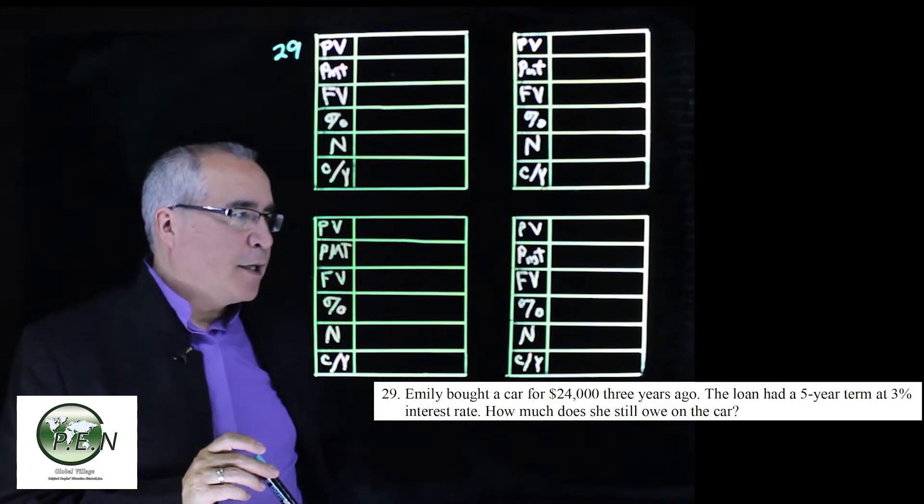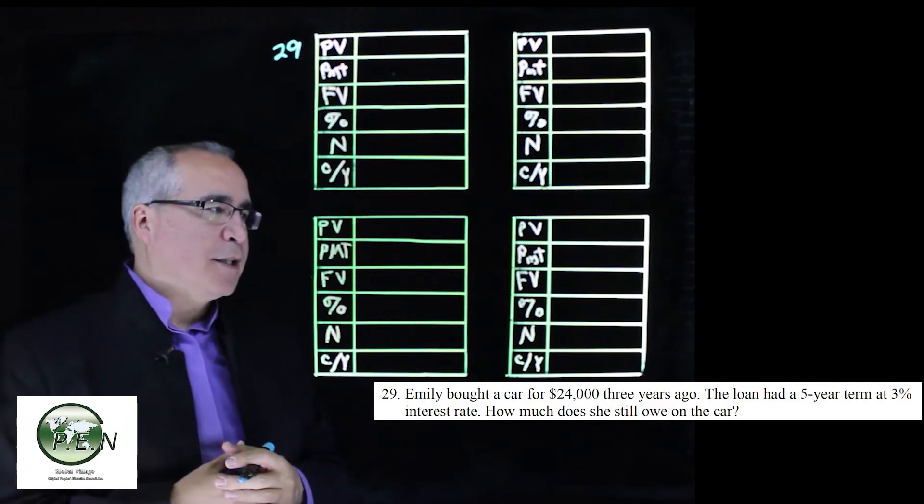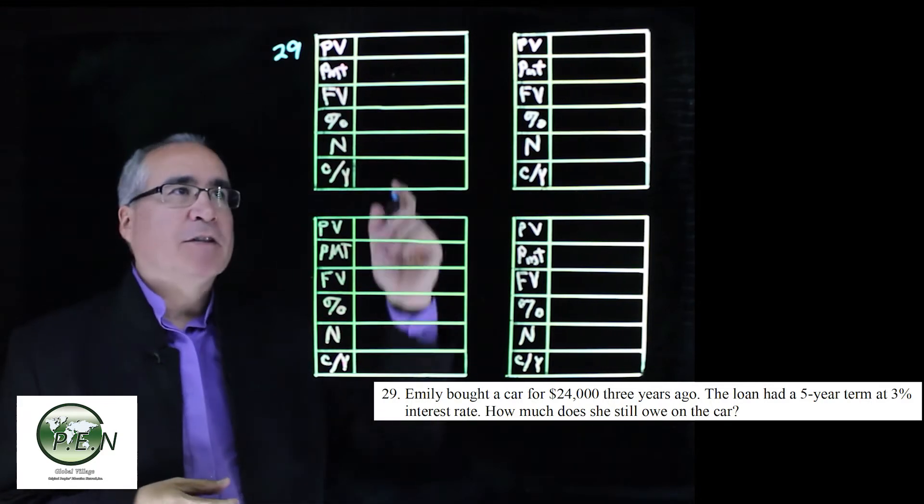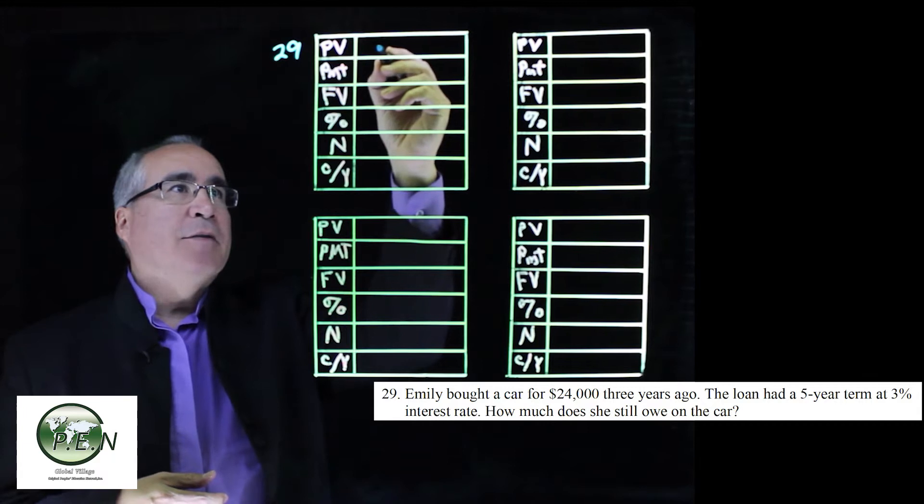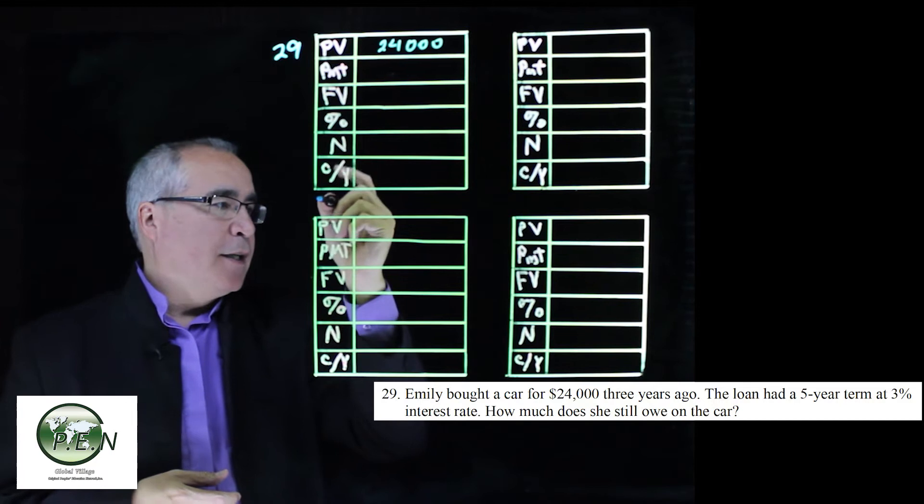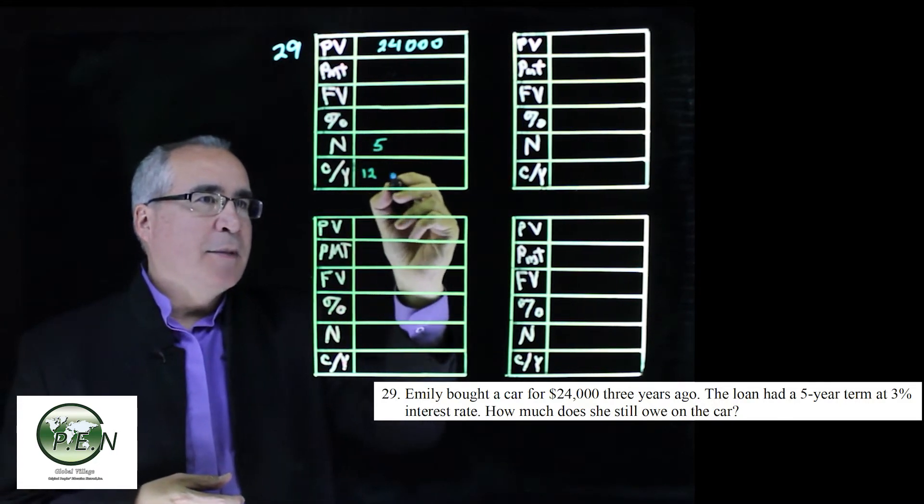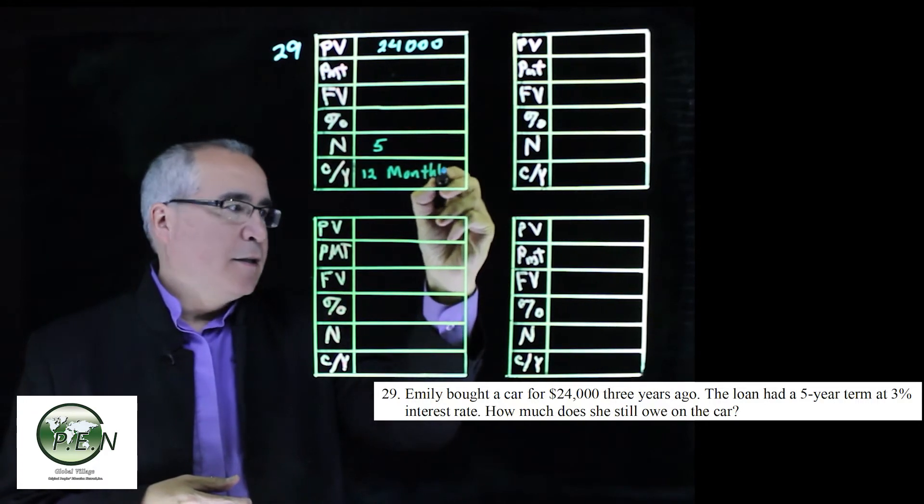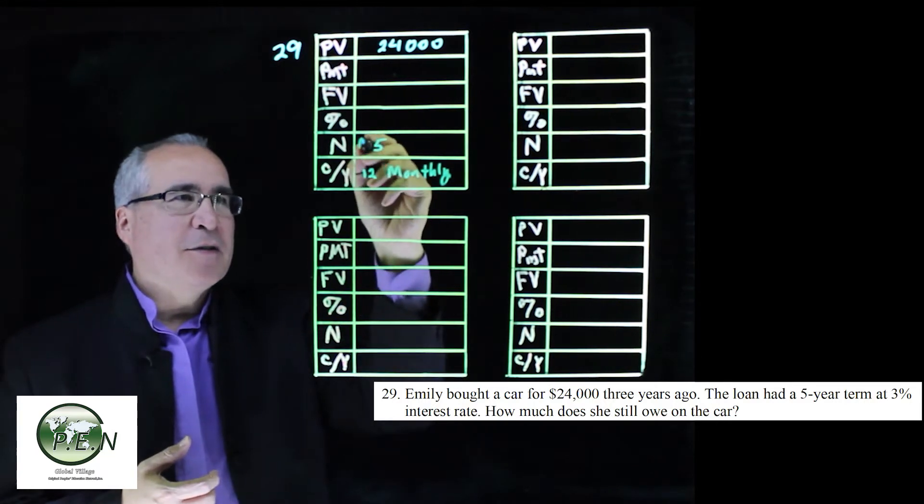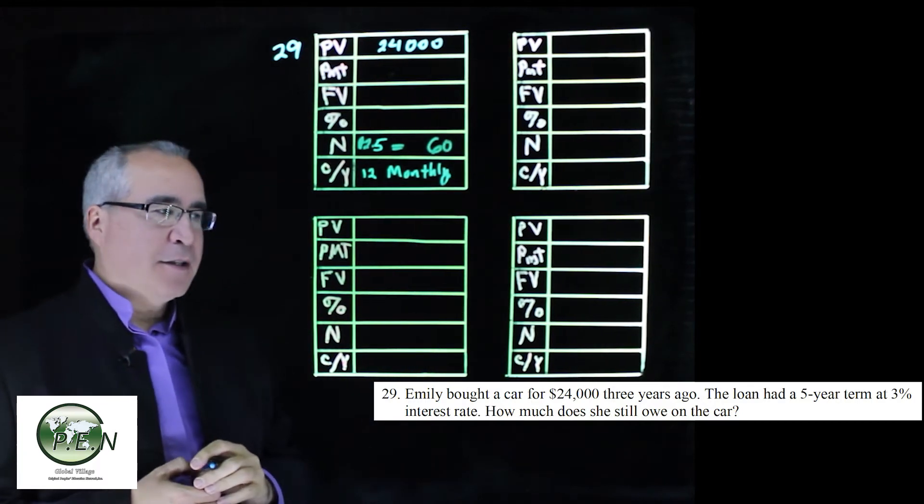We've got Emily who bought a car for $24,000 three years ago. We have to assume that she borrowed all that $24,000, so the loan amount must have been $24,000. The loan had a five-year term. It's monthly because car loans are always paid monthly. So 12 times 5, you had to have a 60-month term on it.